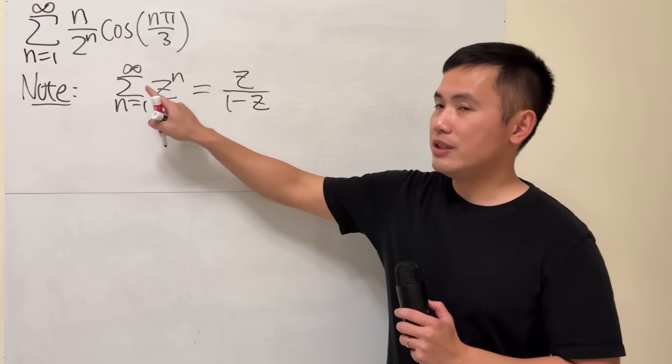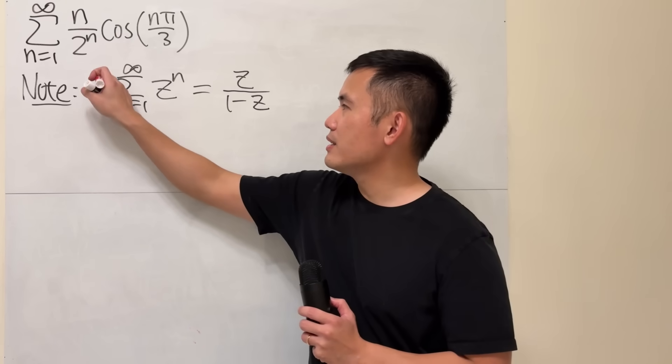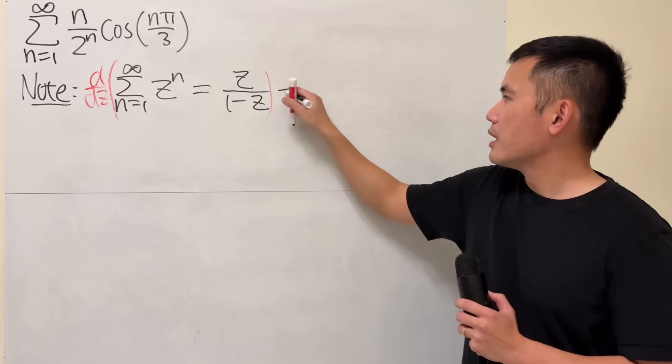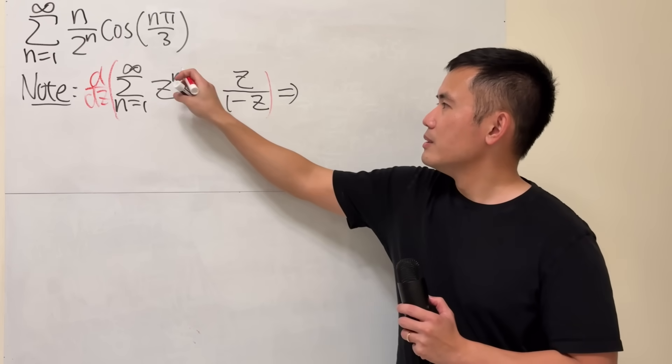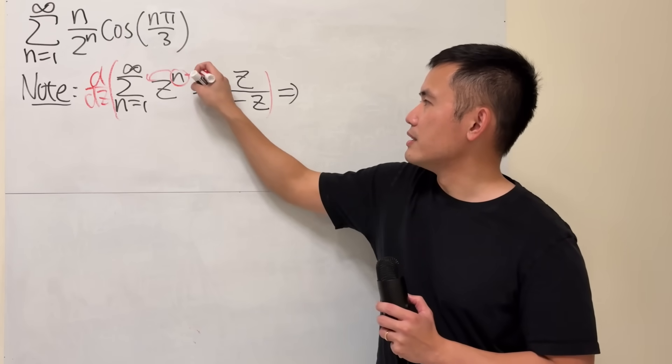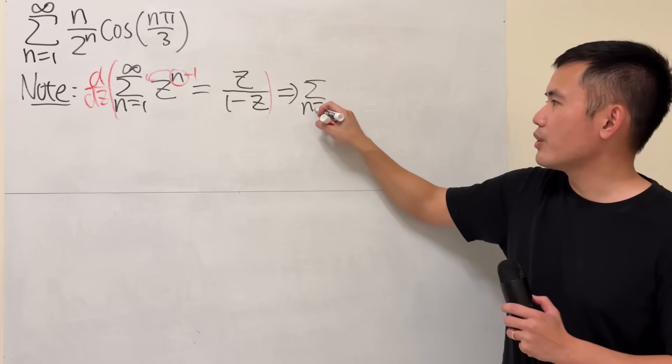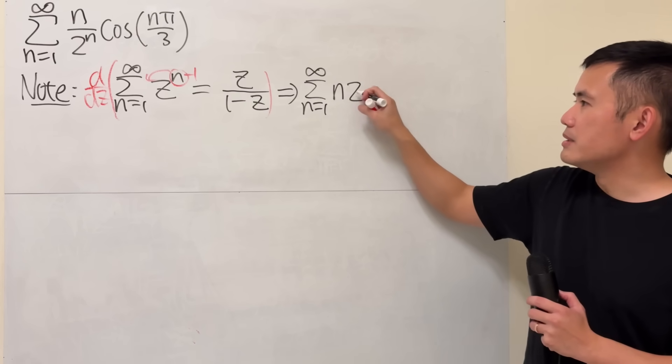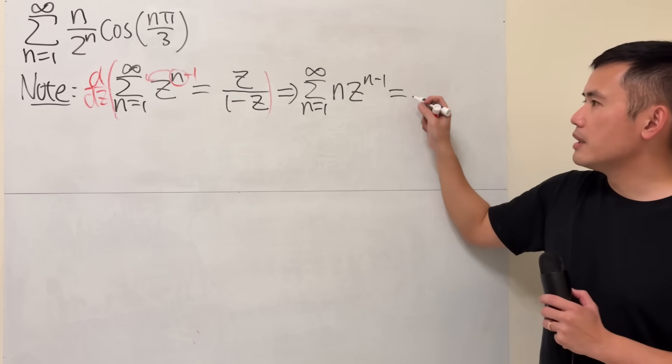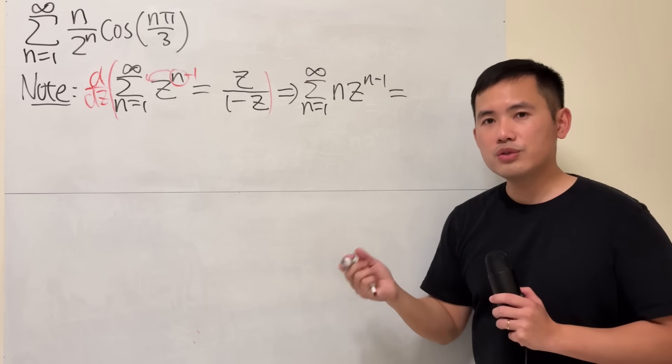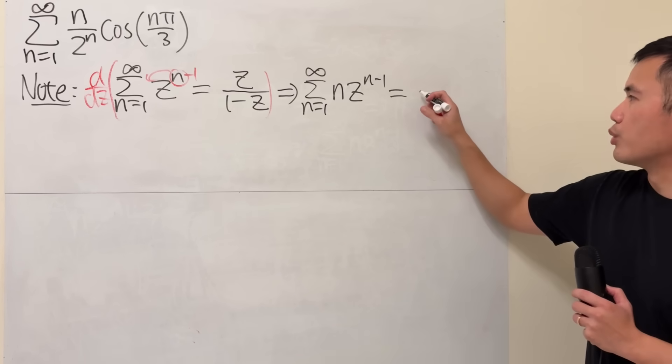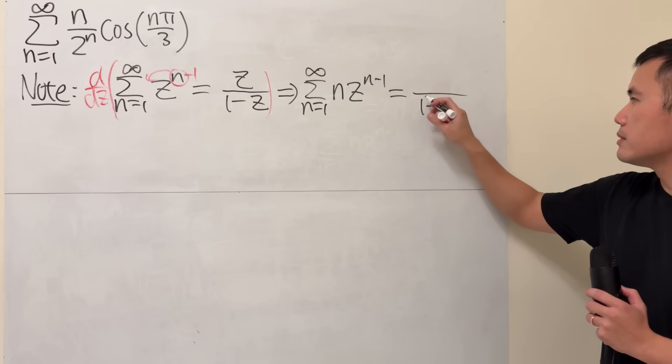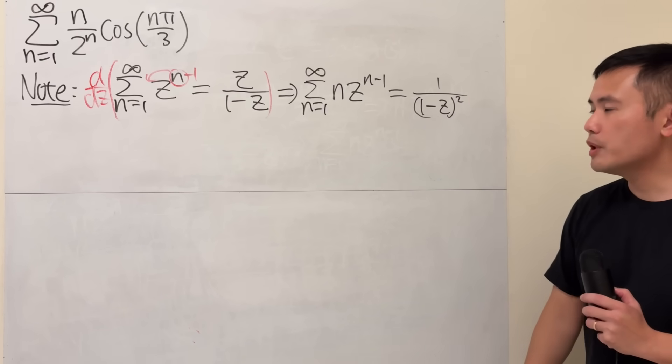I am going to differentiate both sides so we can bring the n to the front. On the left-hand side, bring the n to the front and then minus 1. We will have the series as n going from 1 to infinity, n times z to the n minus 1. On the right-hand side, just use the quotient rule. The bottom squared and then the top is just going to be 1.